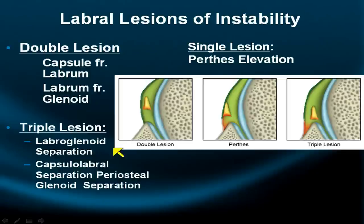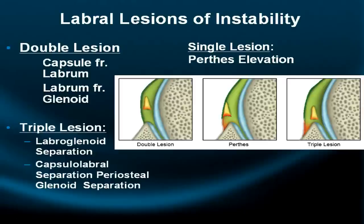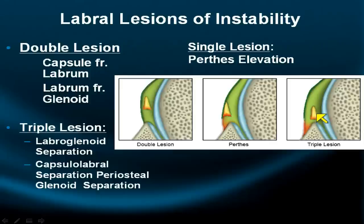In the double lesion, the labrum has separated from the underlying glenoid, and there is also separation of the capsule from the labrum — two abnormalities, hence the designation double lesion. In a triple lesion, there is labroglenoid separation, capsulolabral separation, and periosteal separation at the base — three processes occurring simultaneously, thus the designation triple lesion.